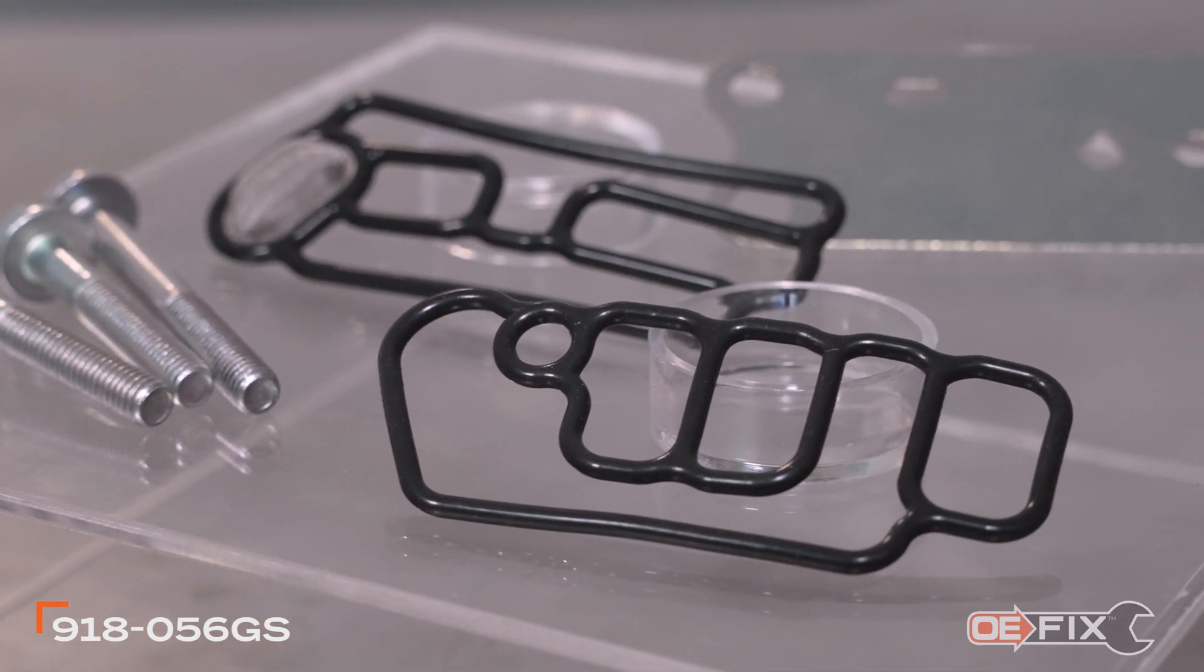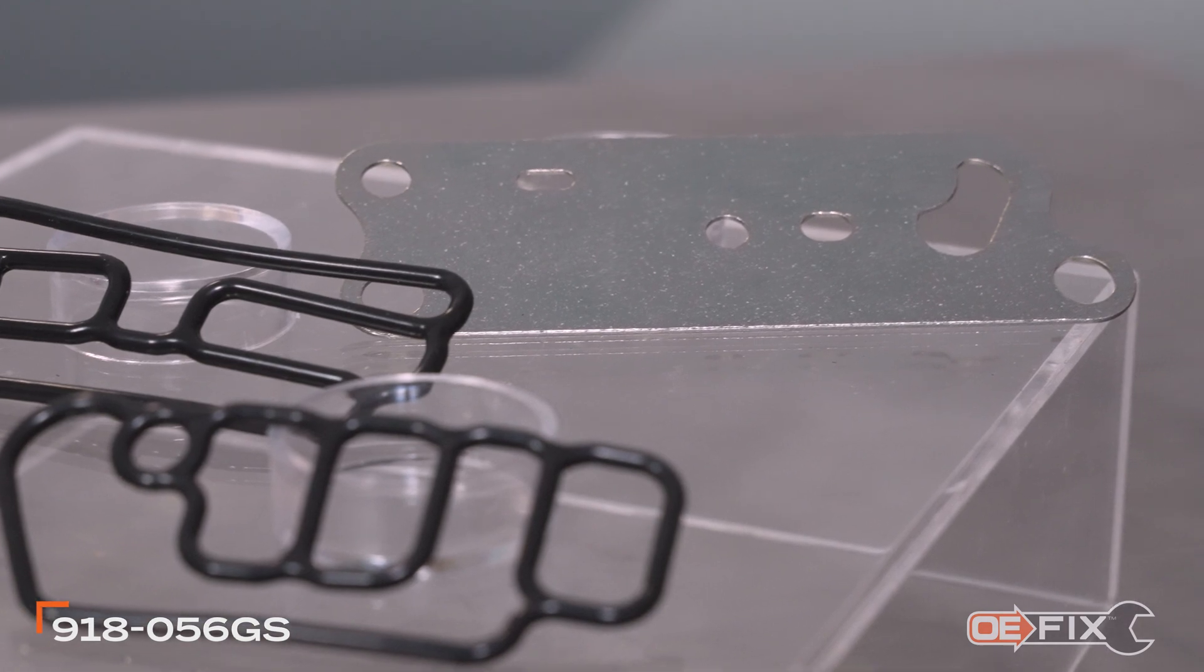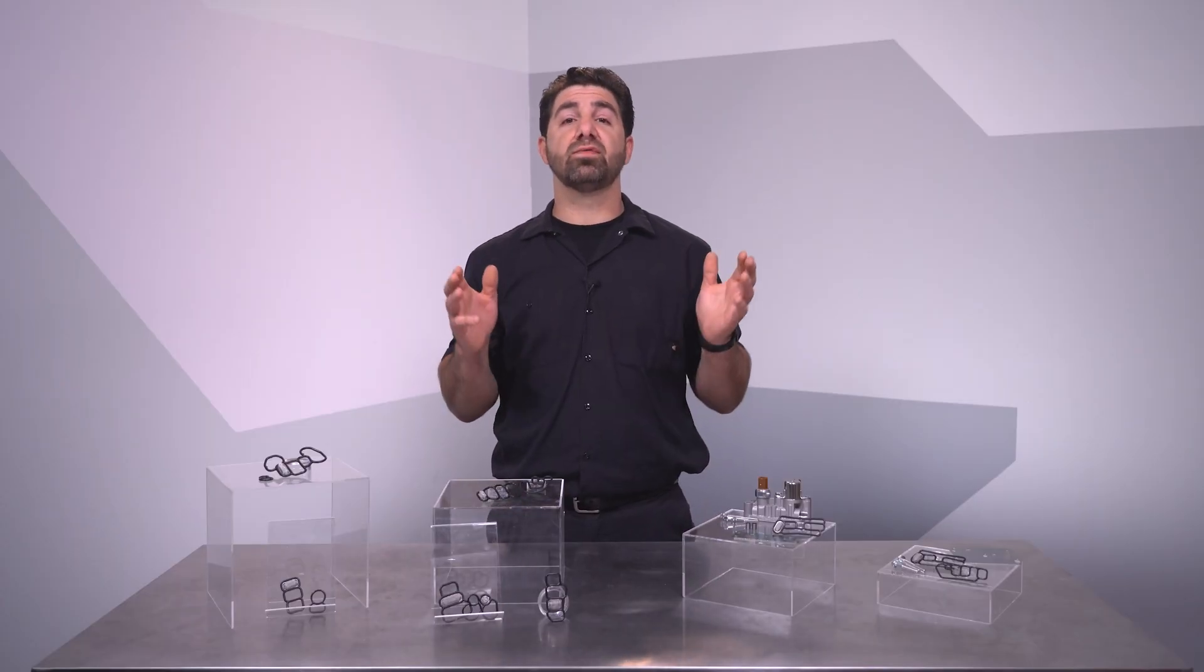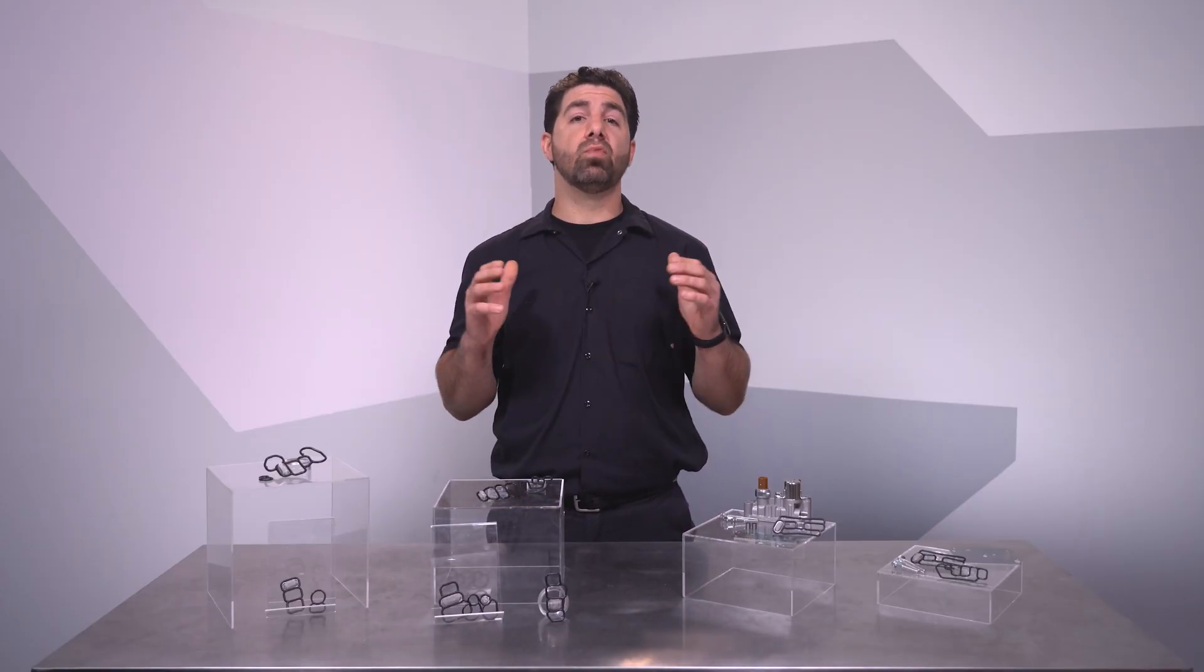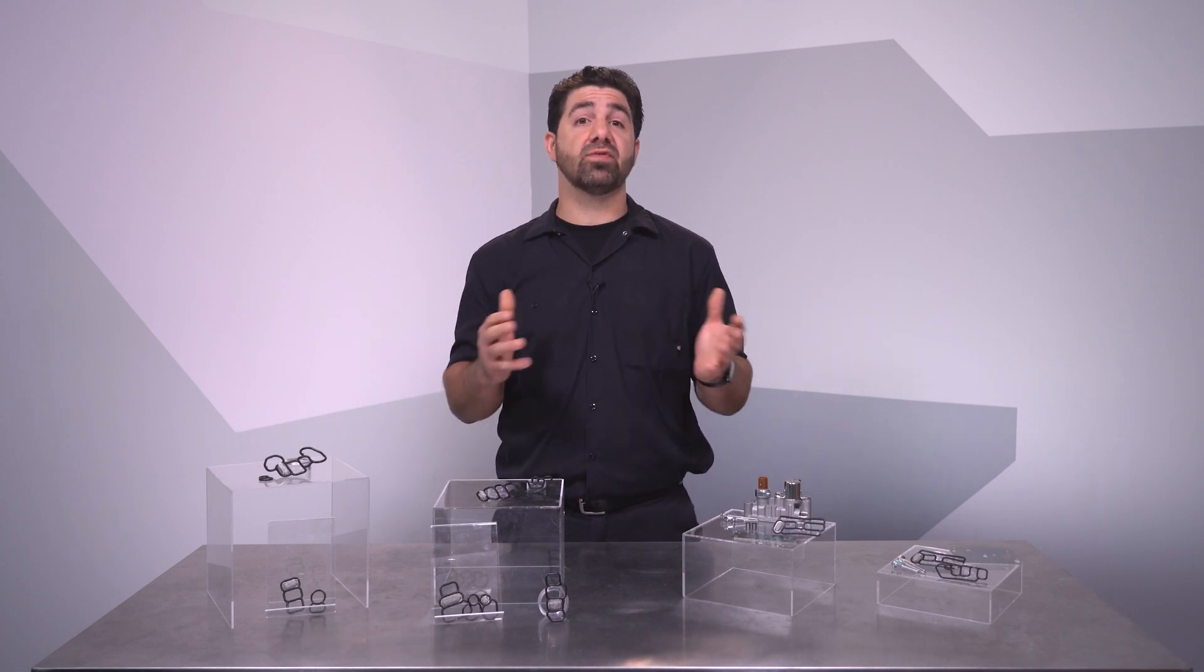Our OE fix 918056GS gasket includes just the parts you need to put your solenoid back into service, allowing replacement of just the part that failed, not a more expensive assembly. This can be a great choice for a higher mileage vehicle or a price sensitive customer.